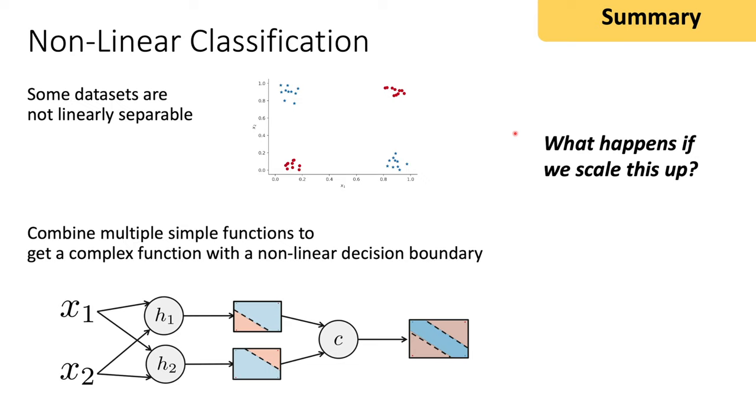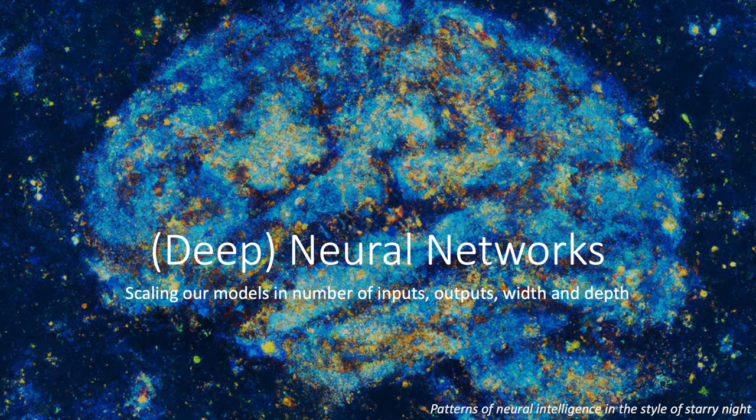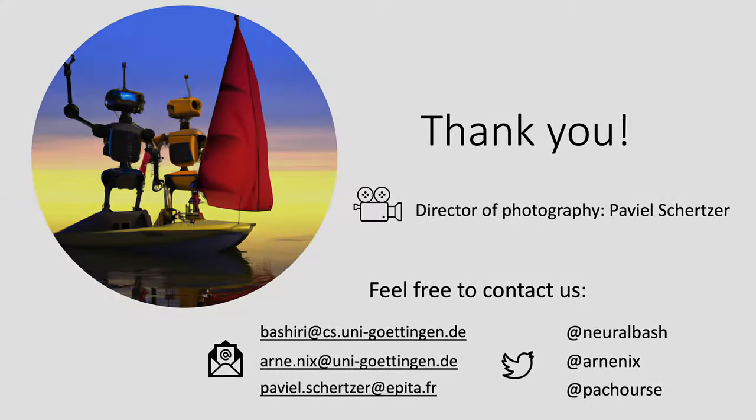And now the question is, what happens if we scale this up to the next level? If we add more layers, more units of computation, what happens then? Well, what happens is deep neural networks. And you will see more about this in the next section. Thank you.